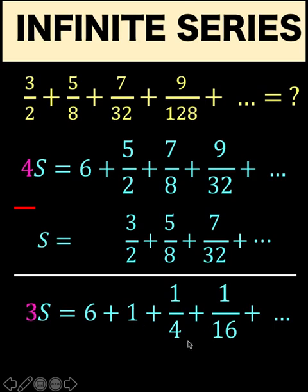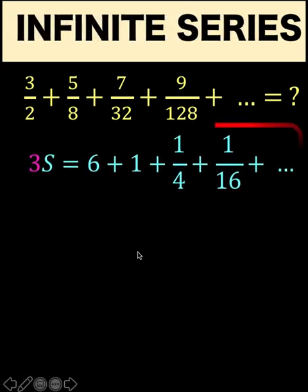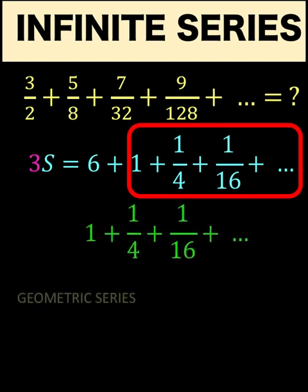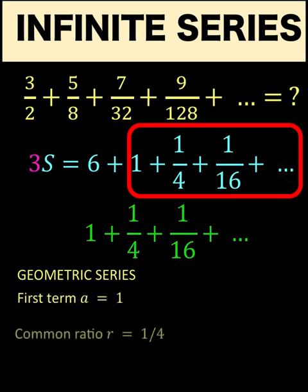Now, let's focus on this equation at the bottom. And particularly, this series here. What kind of series is 1 plus 1 fourth plus 1 over 16? Notice that this is a geometric series, because there is a constant ratio. In other words, I can get this 1 fourth by multiplying 1 by a constant value. I can get 1 over 16 by multiplying 1 fourth by a constant. And that constant is 1 fourth.